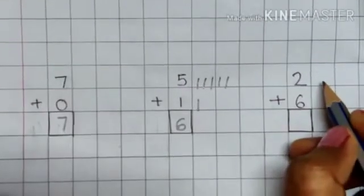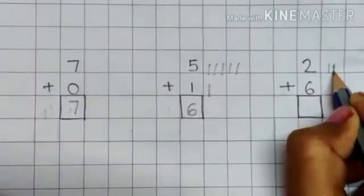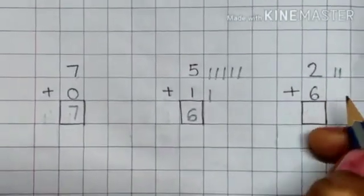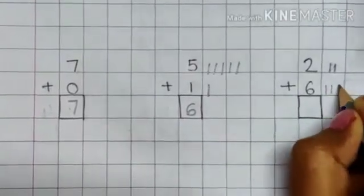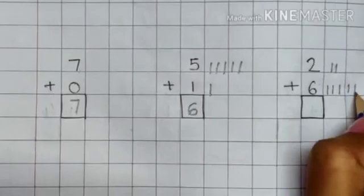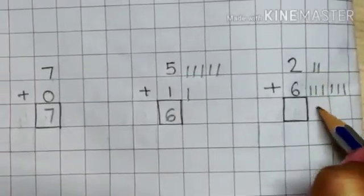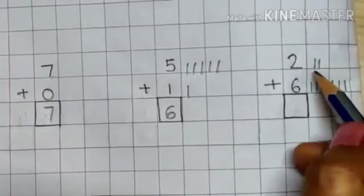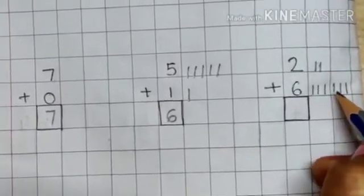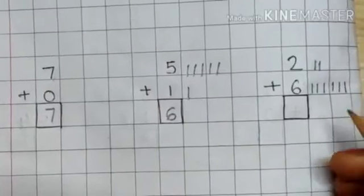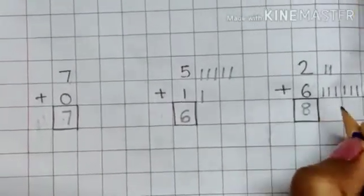The last sum is two plus six. We will draw two lines for two, and six lines for number six: one, two, three, four, five, six. When we add all the lines together: one, two, three, four, five, six, seven, eight. The answer is eight.